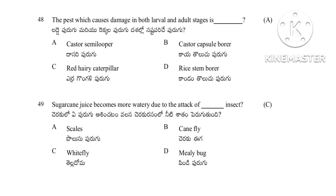Question 47: The pest which causes damage in both larval and adult stage — castor semilooper, castor capsule borer, red hairy caterpillar, or rice stem borer. The answer is castor semilooper, which damages in both larval and adult stages. Question 48: Sugarcane juice becomes more watery due to attack of — scales, cane flies, white flies, or mealy bugs. The answer is white flies.